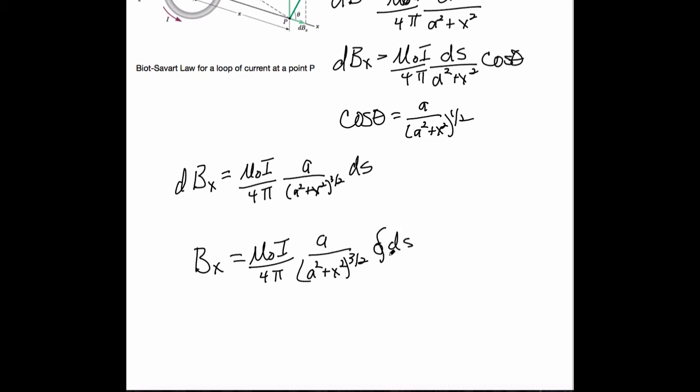Well, the closed integral of DS is just 2 pi times the radius of the ring. So this entire expression becomes mu naught I over 4 pi times, let's put this in brackets, A over A squared plus X squared to the three halves. That's why I wanted the brackets. And the integral of DS is just 2 pi times the radius of the ring, which is A.